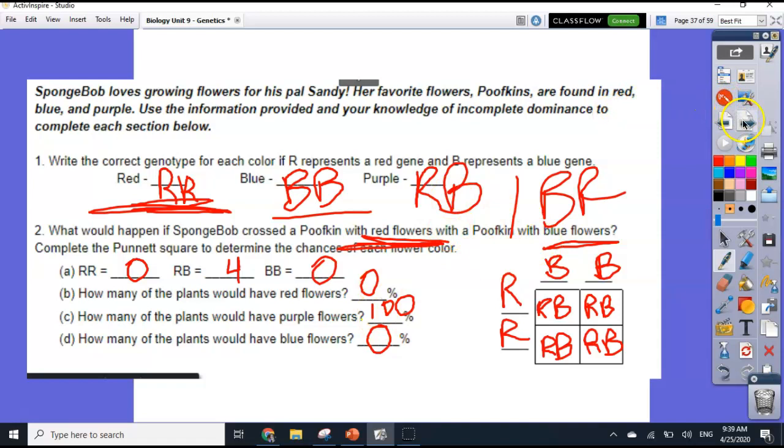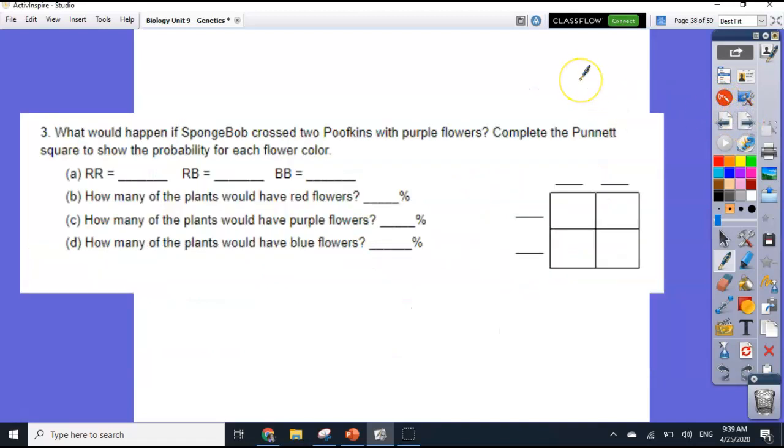I'll do one more with you. Number three. What would happen if SpongeBob crossed two Poofkins with purple flowers? Complete the Punnett square to show. So two purple flowers. So what letters are purple flowers? So purple flowers are R, B. So we want two R, B flowers. So we're going to put an R and a B here. And we're going to put an R and a B here.